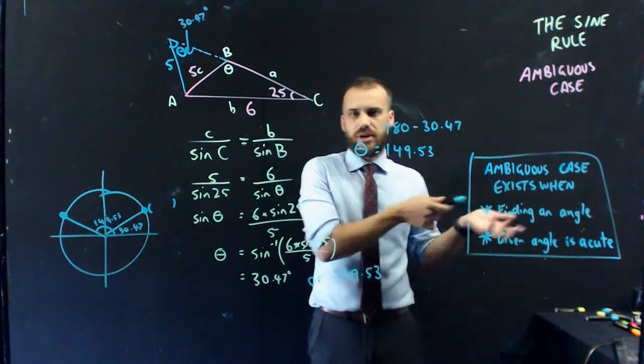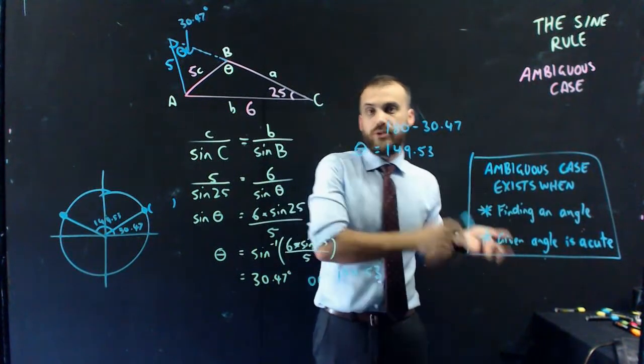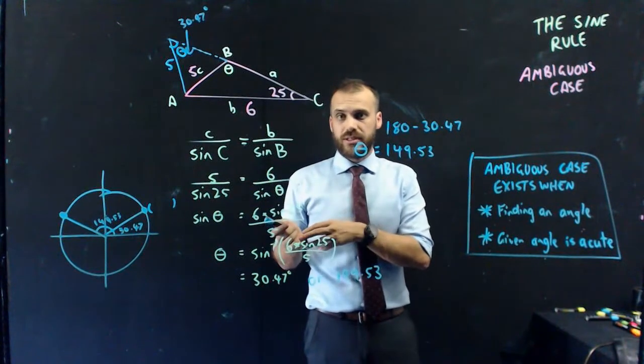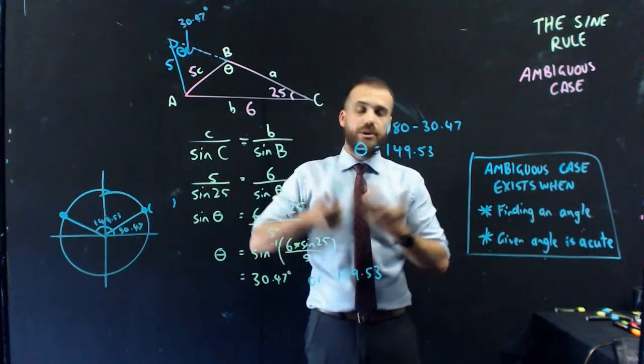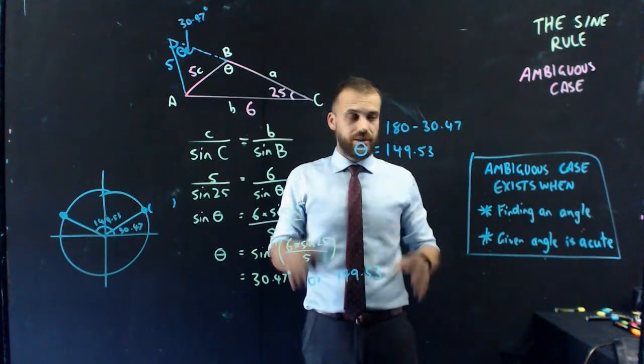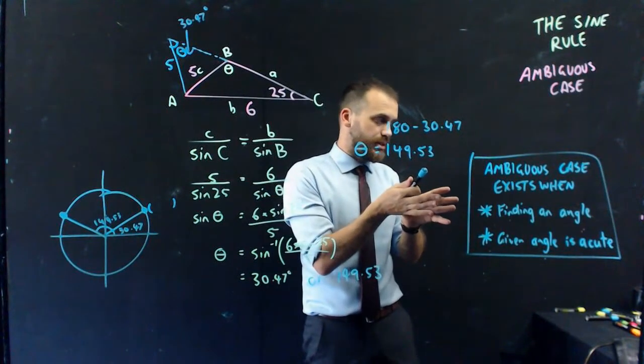And if the one you were given is greater than 90 degrees, and the one you found is greater than 90 degrees, that means your internal angles would be greater than 180, which just isn't going to fly. So that's when the ambiguous case exists.